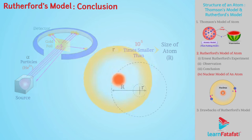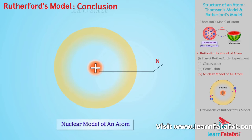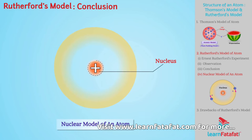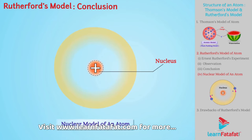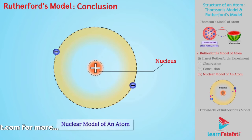With this information, Rutherford put forth the nuclear model of an atom. According to this model, a positively charged dense mass situated at the center of the atom is called the nucleus. The size of the nucleus is very small with respect to the size of the atom, and electrons revolve around the nucleus in a circular path.